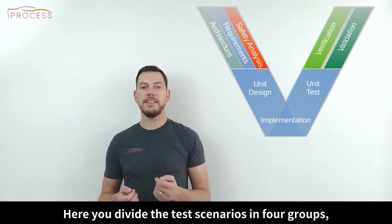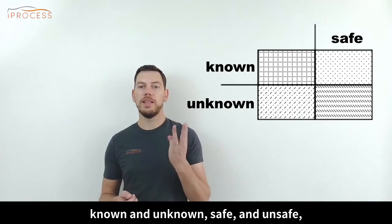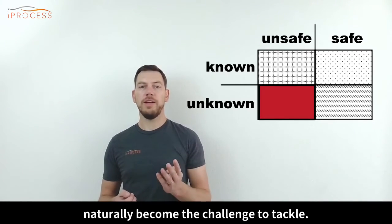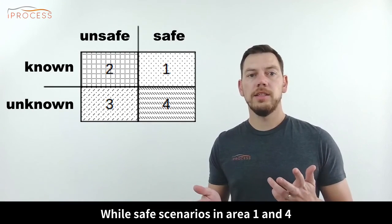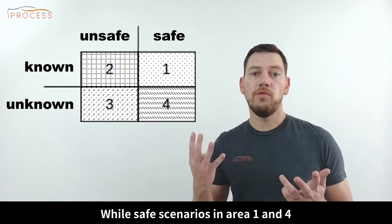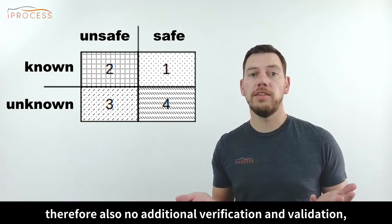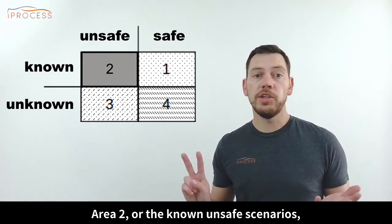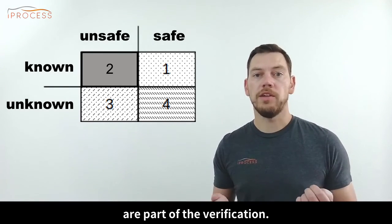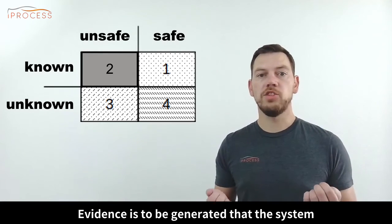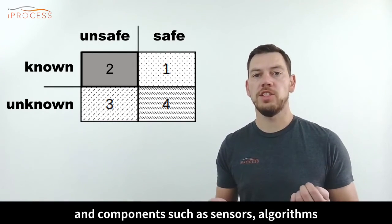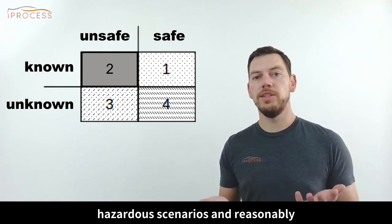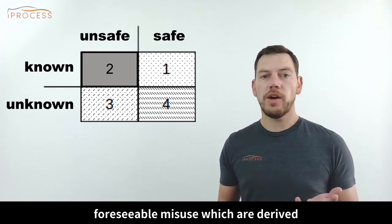In the validation phase, you divide the test scenarios into four groups: known and unknown, safe and unsafe, where the unknown and unsafe scenarios naturally become the challenge to tackle. Safe scenarios in areas 1 and 4 do not require design changes and therefore no additional verification and validation. Unsafe scenarios add those steps. Area 2, the known unsafe scenarios, are part of the verification. Evidence is to be generated that the system and components such as sensors, algorithms, and actuators behave as expected for known hazardous scenarios and reasonably foreseen misuse, which are derived from the safety analysis.